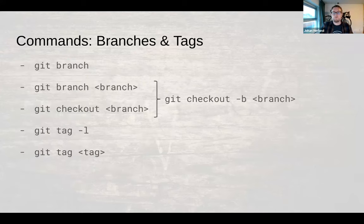Git branch will show you a list of your current branches and you can create new branches with it as well. You can also use git checkout to switch to that branch and git checkout dash B is a handy shortcut when you want to start a new branch and switch to it. Similarly, for tags, git tag dash L lists the existing tags, and you can also use git tag to create a new tag.